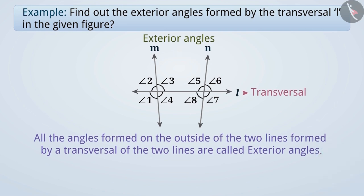The angles formed by the transversal L outside of the two lines M and N are angle 1, angle 2, angle 6, and angle 7. Therefore, in the given figure, all these angles are exterior angles.